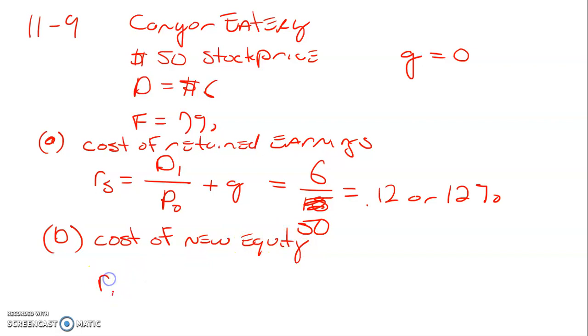That's Re. That would normally be, let's write it out. So D1 divided by P0 times 1 minus F, the flotation costs, plus G. Of course, the G is 0.